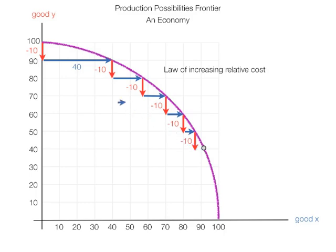Notice the last X gained is a lot less than 40, and it goes down every time. Even though I'm always giving up 10 units of Y, I'm getting less X each time.